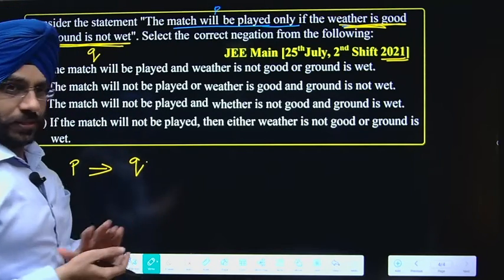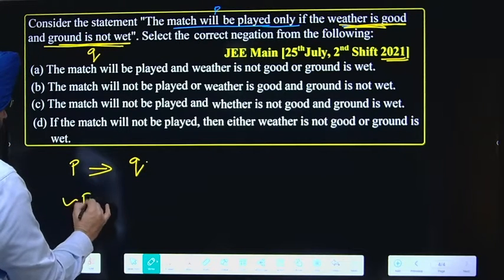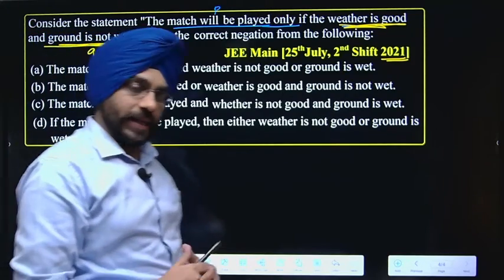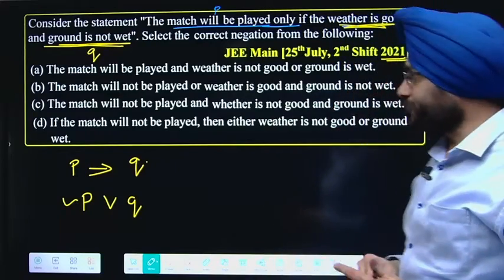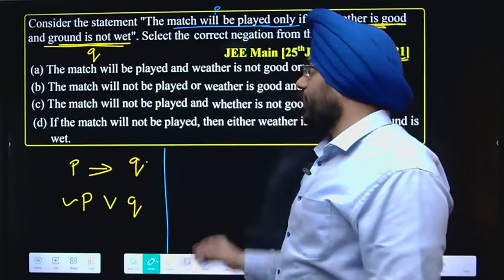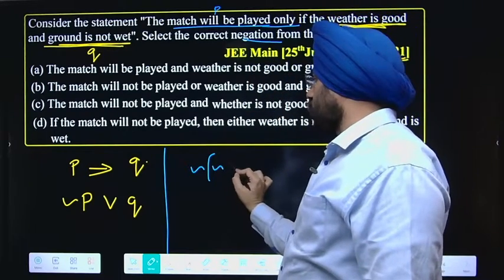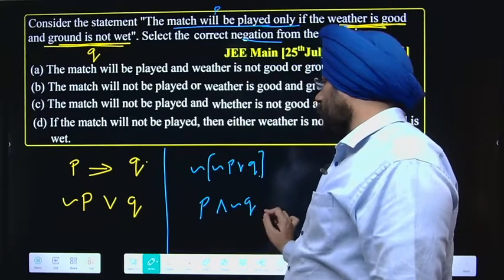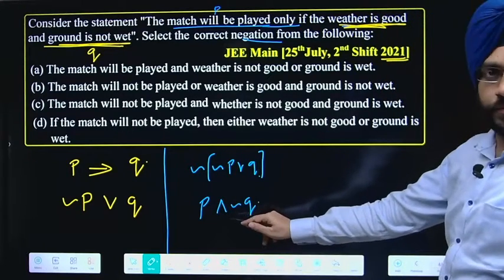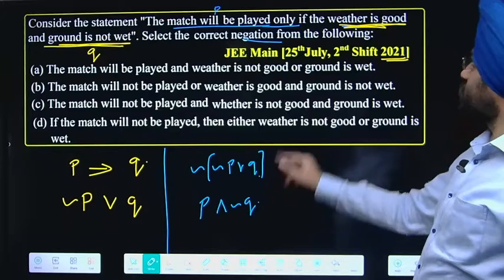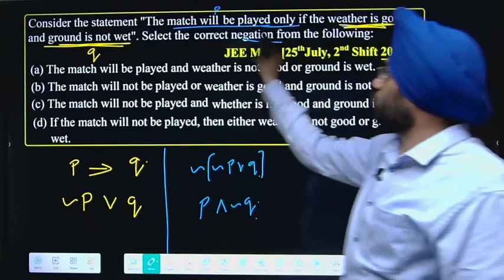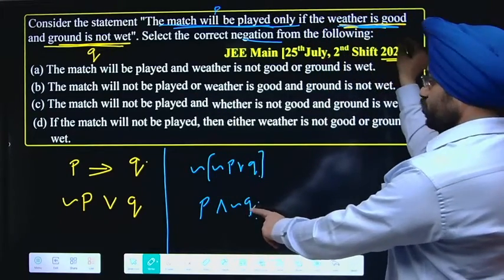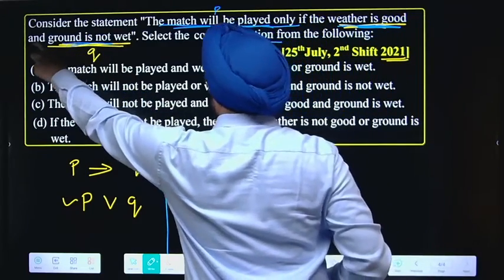We have the conditional term: if Q then P (only if structure), which can be written as not P or Q. Now to find the negation, the negation of 'if P then Q' is 'P AND not Q'. So taking the negation: we get P AND negation of Q, meaning 'the match will be played' AND the negation of 'weather is good and ground is not wet'.